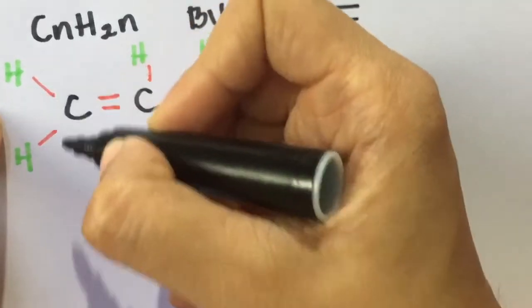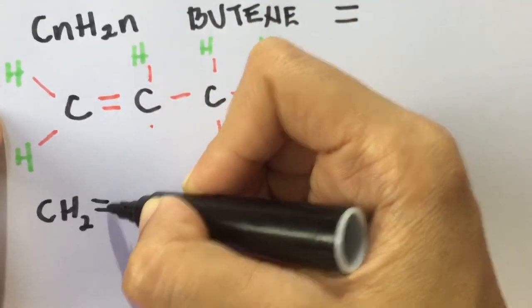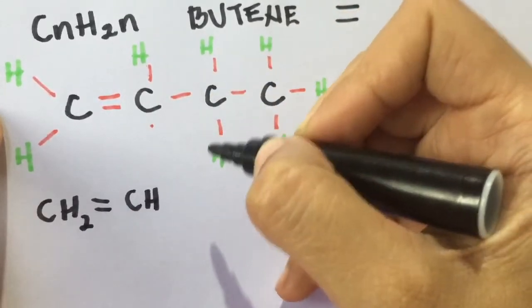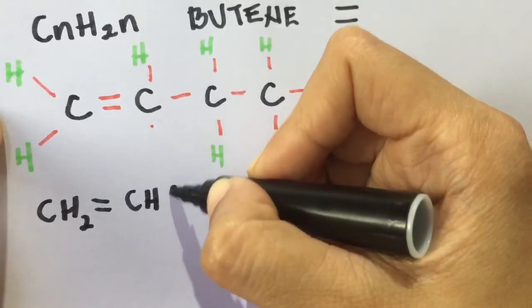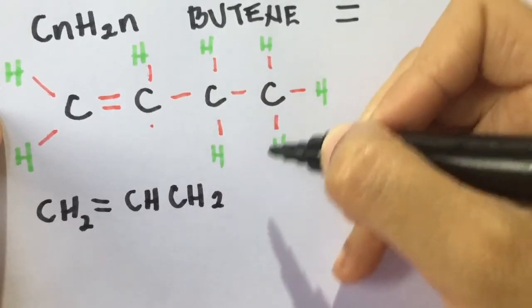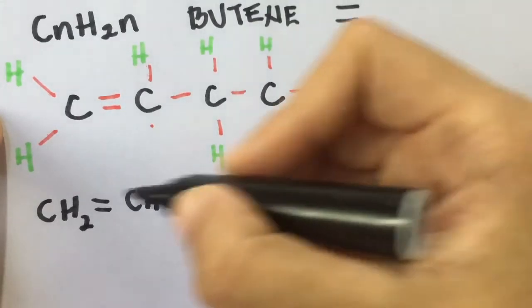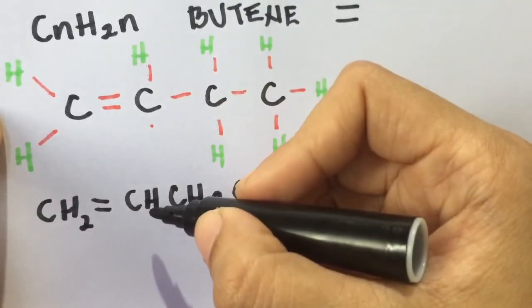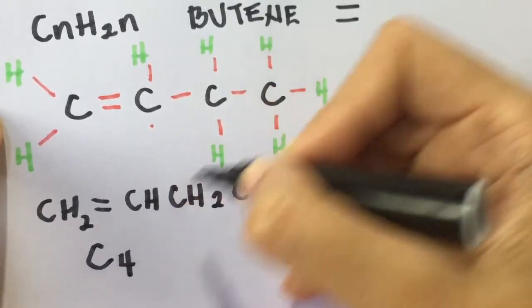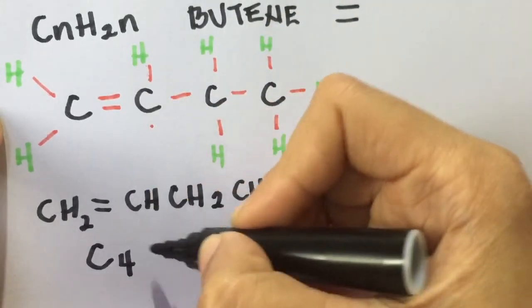Next. How about the condensed structural formula? CH2, do not forget the double bond, CH, and then CH2. And then we have CH3. How about its molecular formula? There are four atoms of carbon, so C4. And then we have three, four, five, six, seven, eight. Eight atoms of hydrogen.